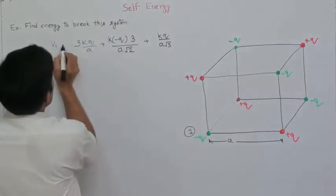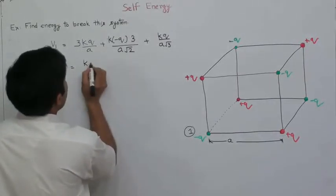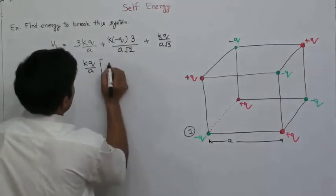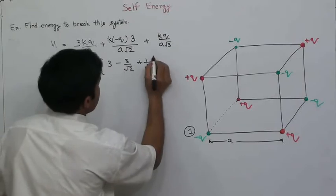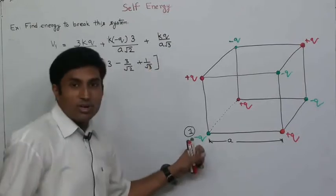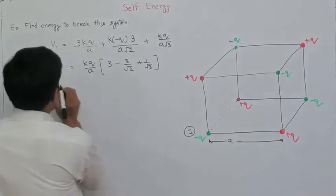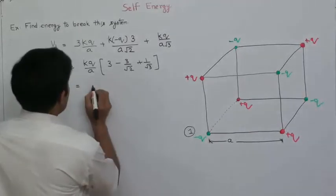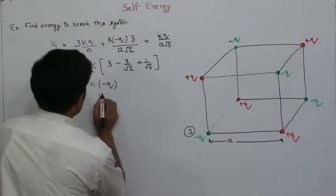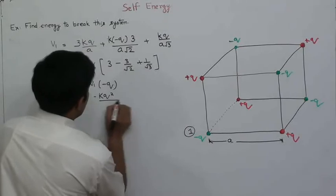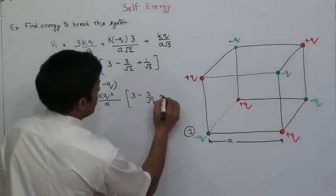What is the self energy of point one? We multiply potential by the charge at point one. Energy equals V1 times minus q, which equals Kq squared divided by a root 3 times the quantity (3 minus 3 by root 2 plus 1 by root 3).